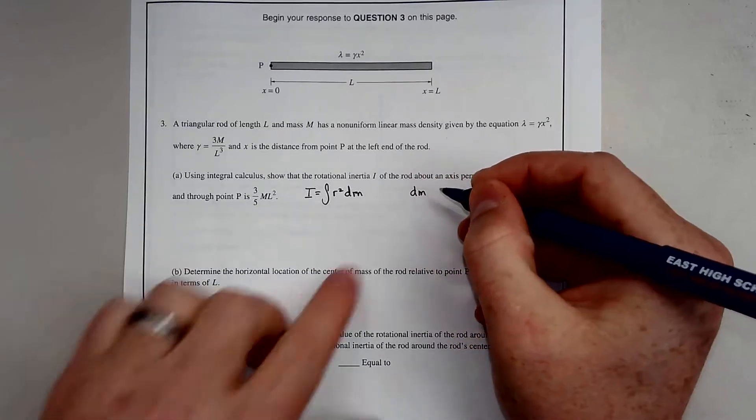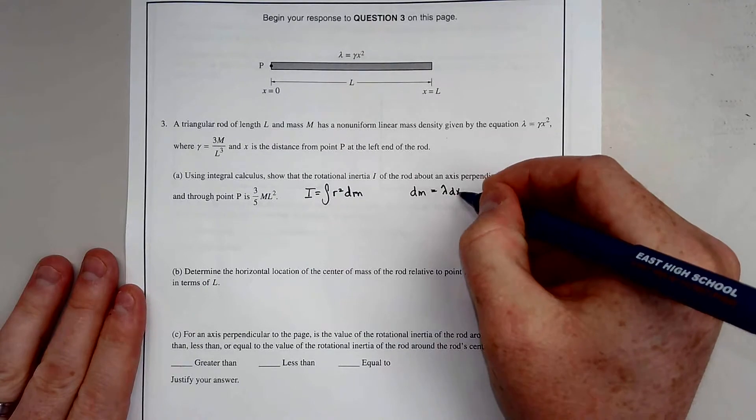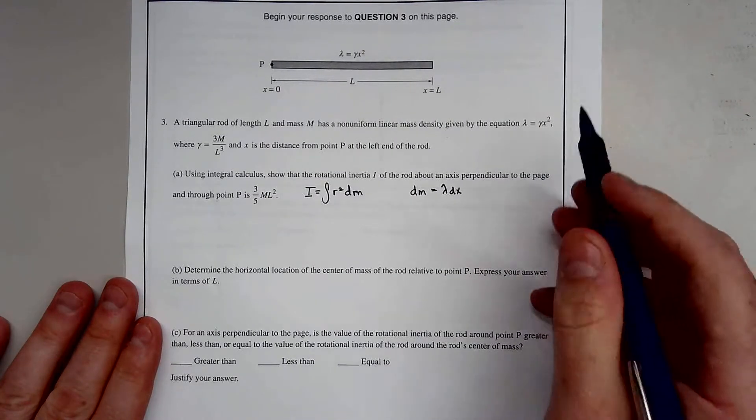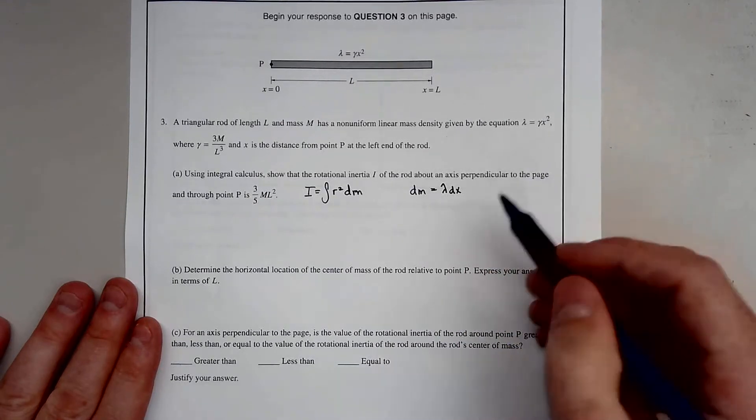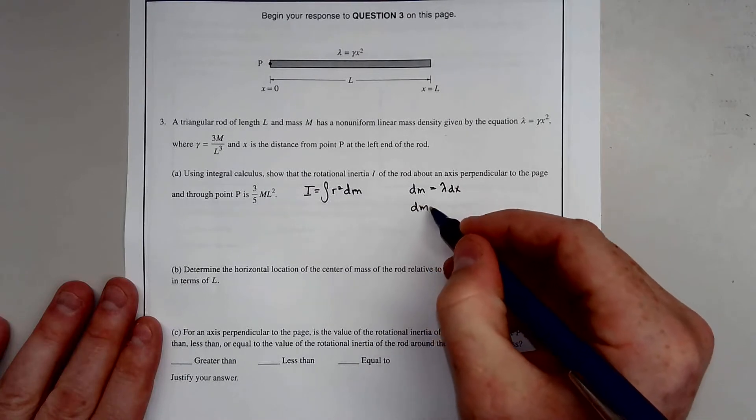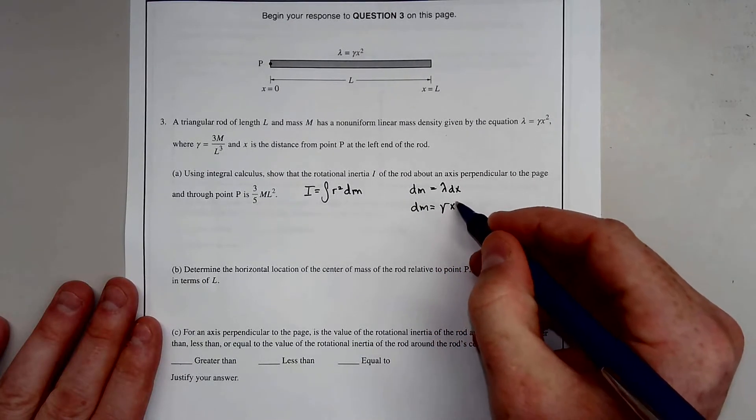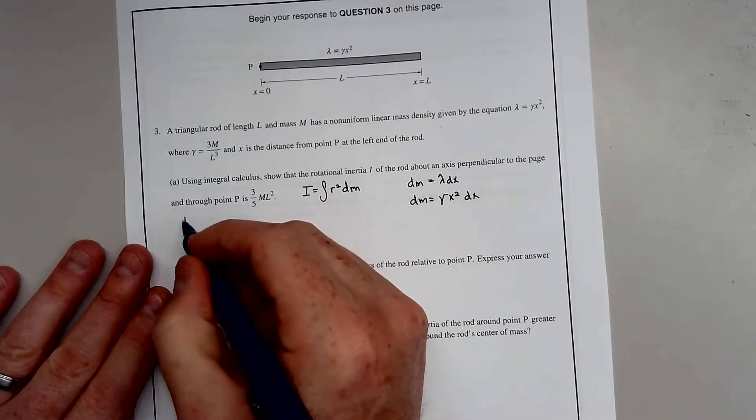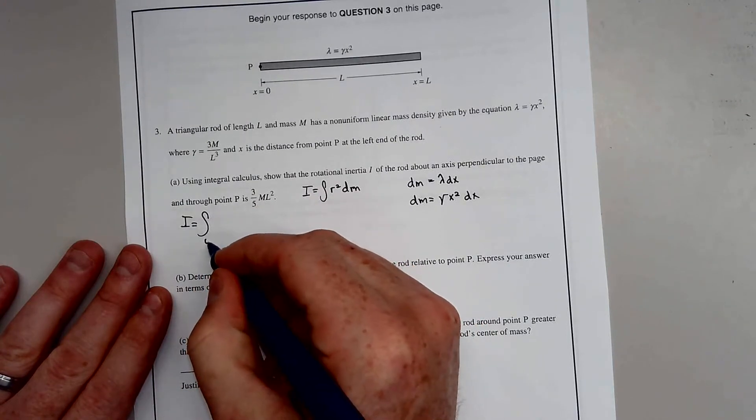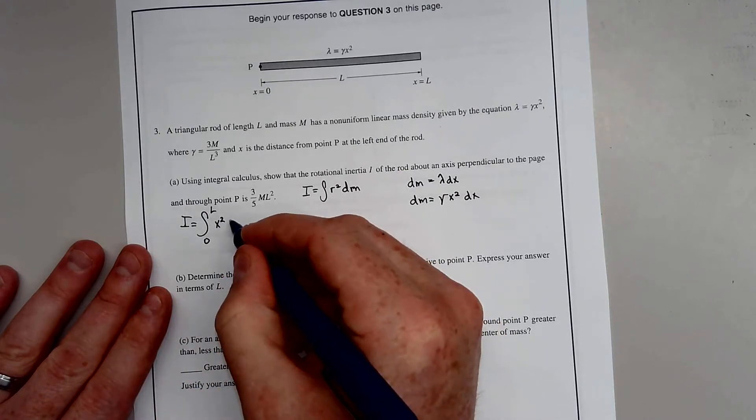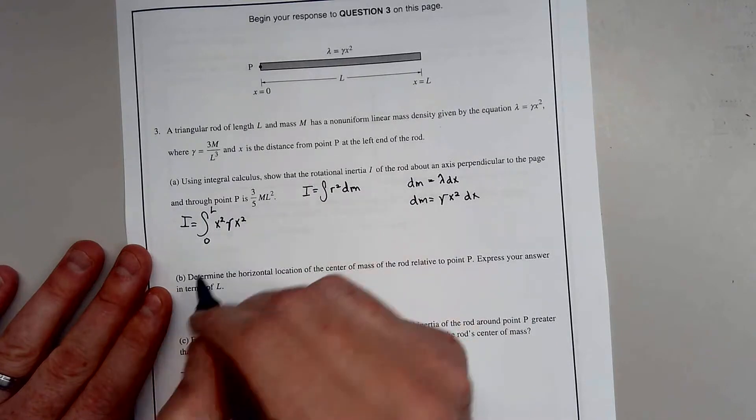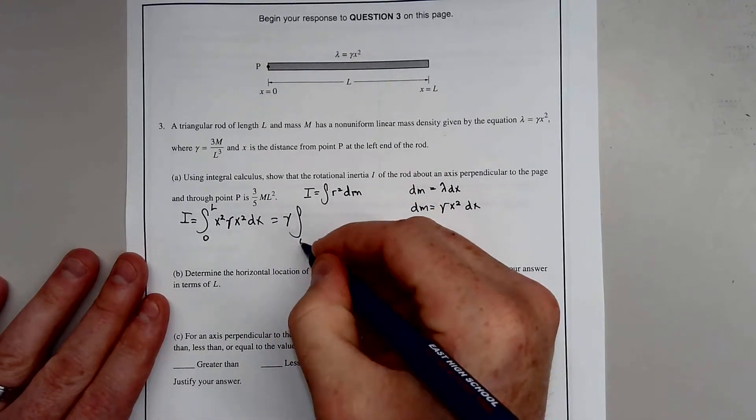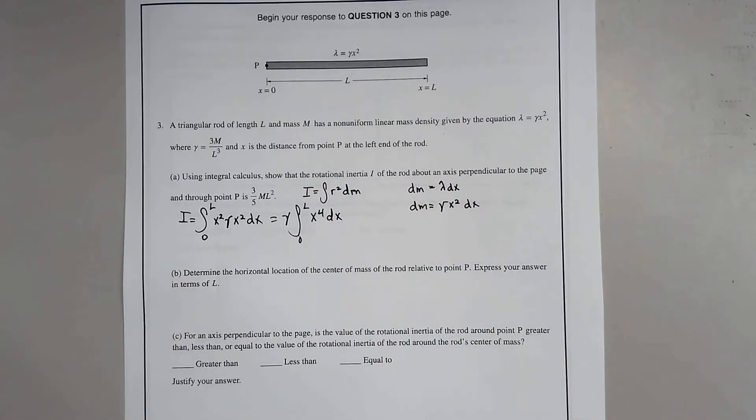We know that dM is equal to the linear density times some distance, so dM equals lambda X squared dX. Plugging this in, we get the integral from 0 to L of X squared times gamma X squared dX. Gamma is a constant, so we pull it out front: gamma times the integral from 0 to L of X to the fourth dX.